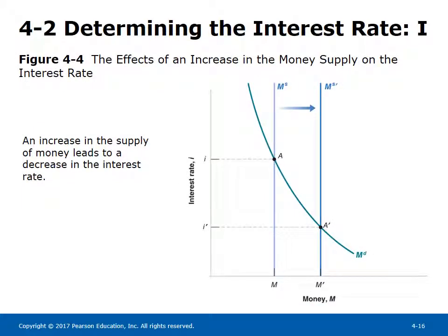Figure 4-4 illustrates the effects of an increase in the money supply on the interest rate. An increase in the supply of money shifts the money supply curve to the right, leading to a decrease in the equilibrium interest rate. As money supply increases, money demand remains less than money supplied at the old equilibrium, so people buy bonds with the excess money, bond prices increase, and the interest rate falls. This is how monetary policy is conducted — by changing the money supply, the equilibrium interest rate changes, affecting aggregate demand.